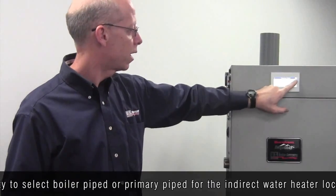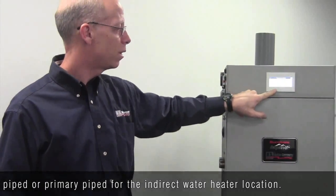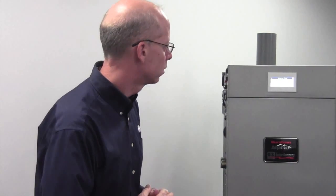If you choose primary piped, we have the ability to start two indirect water heaters at the same time. You select two boiler start, and now we'll start two boilers for an indirect water heater call for heat.